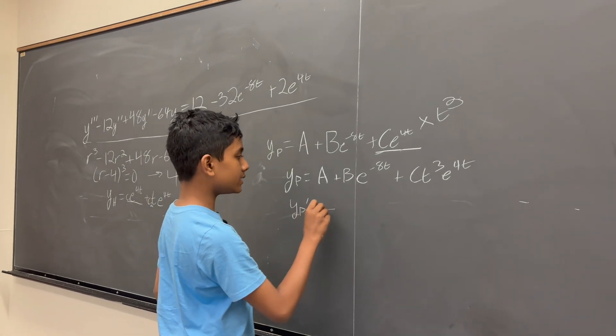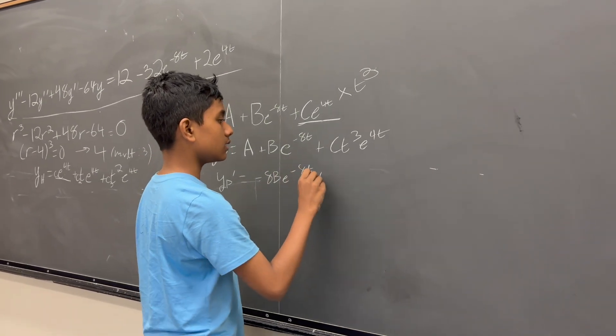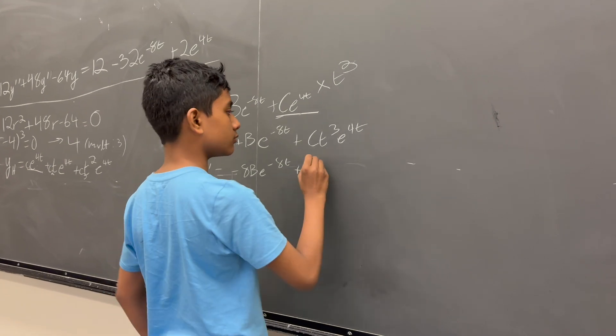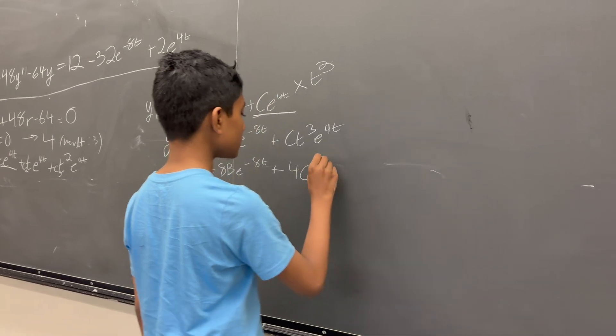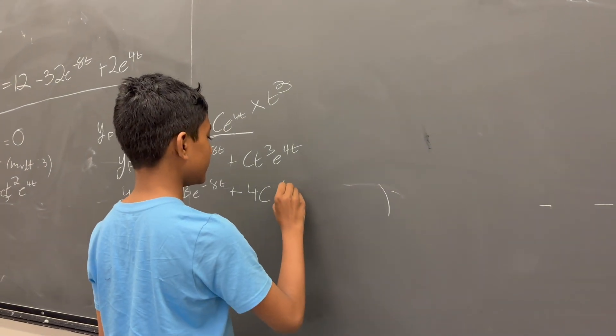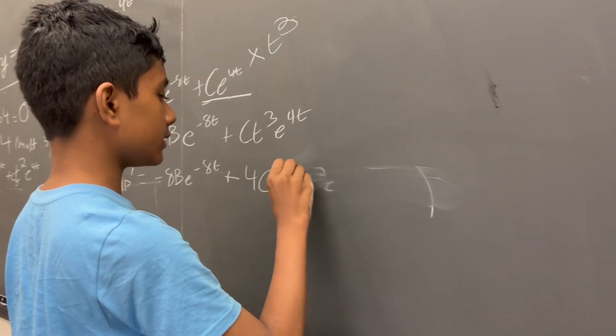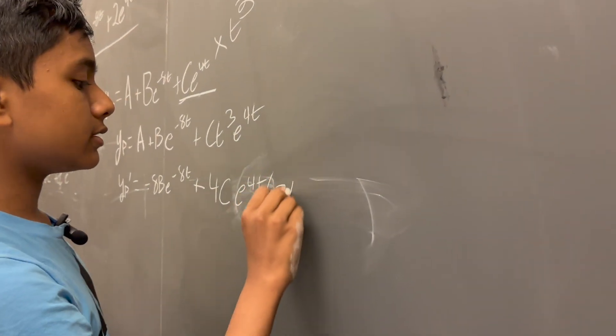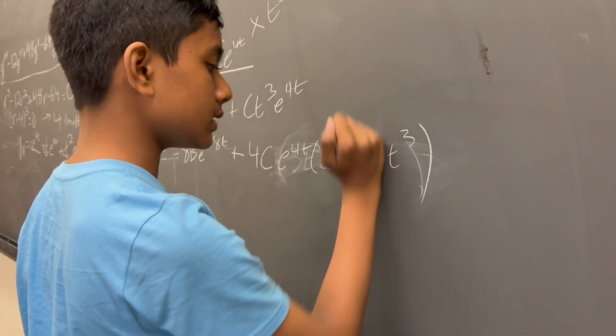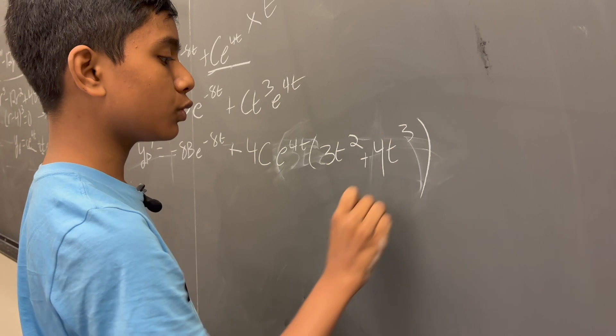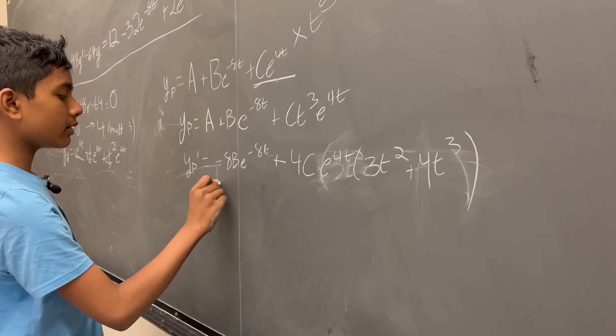So now, let's take the derivative. Yp prime is equal to minus 8B e to the minus 8t, plus, and now we have to start abusing the product rule. So, 4t times, what we get in here is going to be 3t squared e to the minus 8t. What we get in here is going to be 3t squared plus t cubed. No, this is inaccurate. This would be plus 4t cubed. So, as you can see, everything's pretty much going smoothly over here.